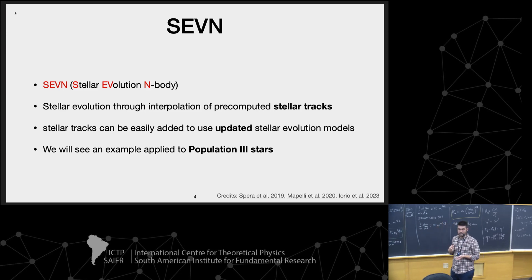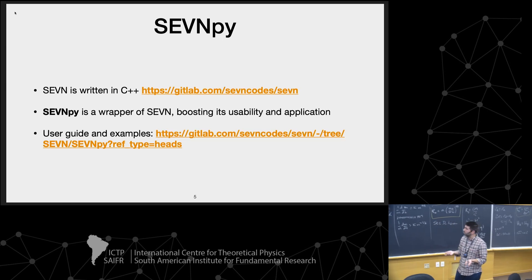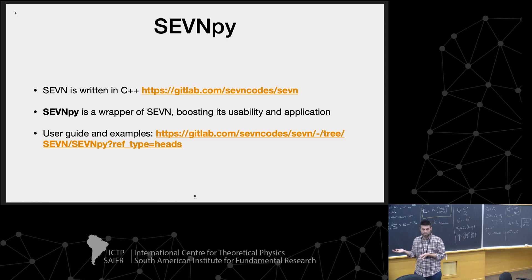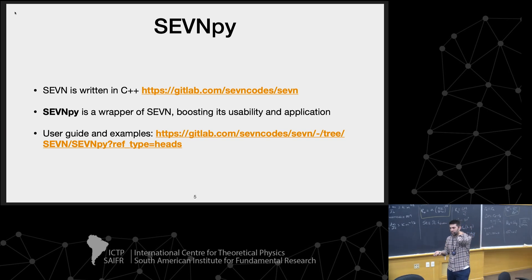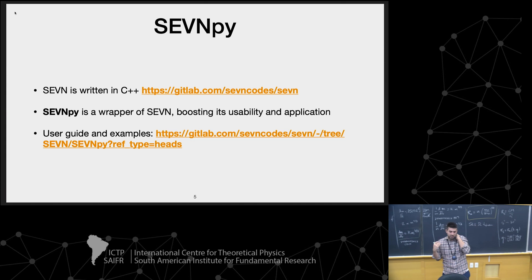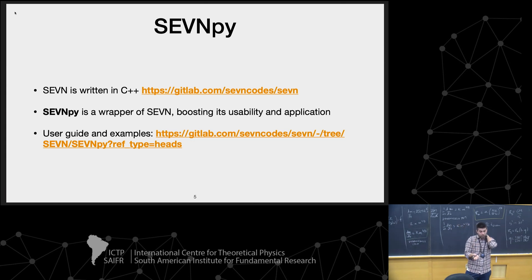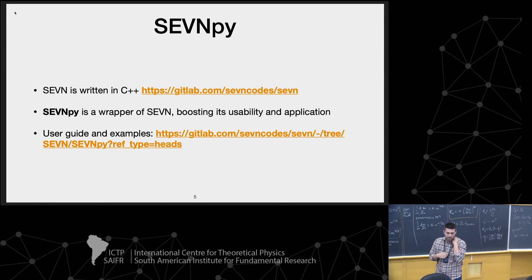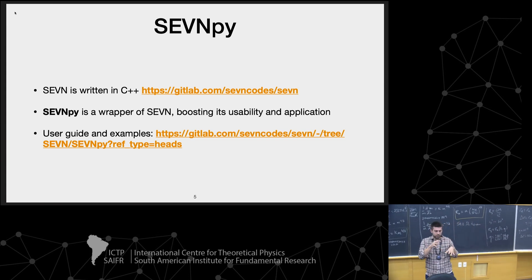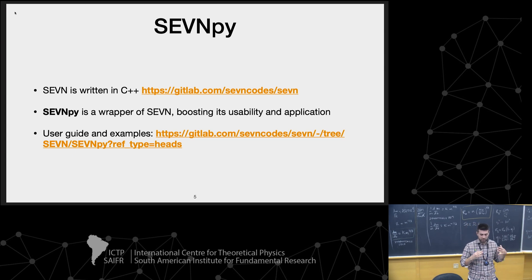We are going to see an example using population three stars. SEVN is written in C++. Recently, a wrapper of SEVN called SEVN-Pi has been developed. It really boosts the usability of SEVN because you can use SEVN from Python, like in a Jupyter notebook. We do not have time to see how to use SEVN-Pi, but if you're curious, I encourage you to go to the user guide, which is super well written, and start crunching your code and using SEVN directly from Python.